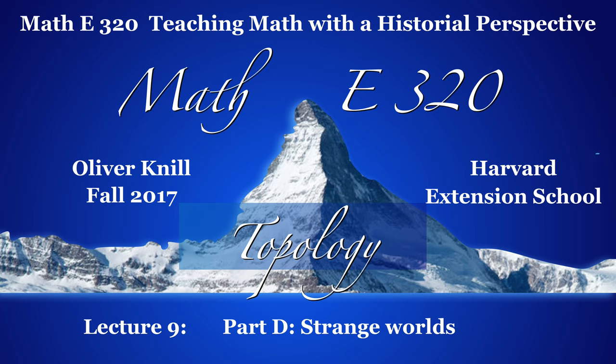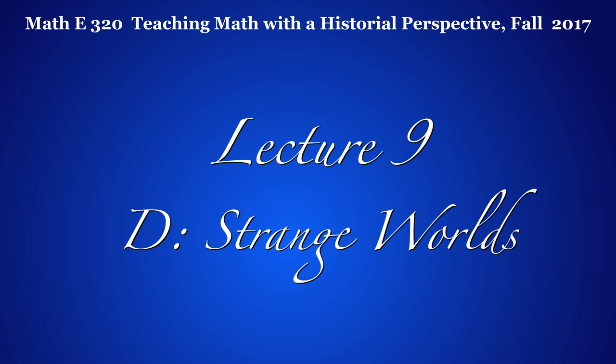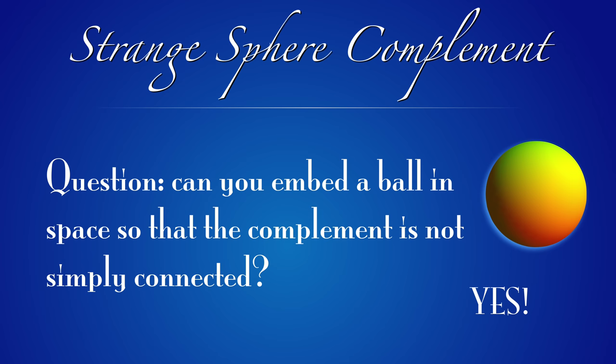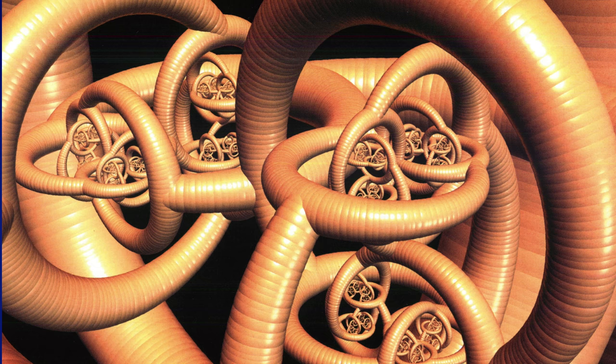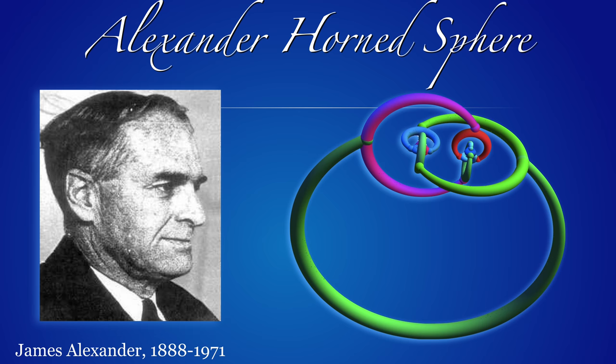In this last part, we want to illustrate how strange the world of topology can be. It also illustrates the need for mathematics which makes these concepts rigorous. The first question is: can we embed a ball into space in such a way that the complement is not simply connected? The answer is yes. The object is called the Alexander sphere. Here's a picture from the book The Math Book. Alexander was a great topologist — he was also a mountain climber. Interesting personality.